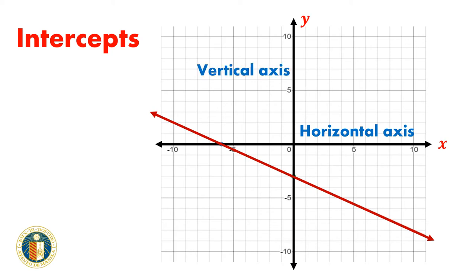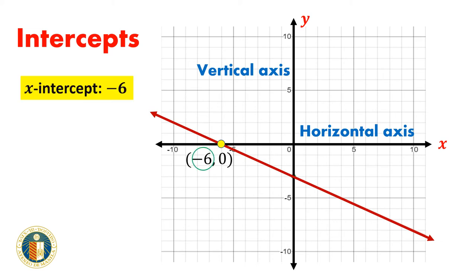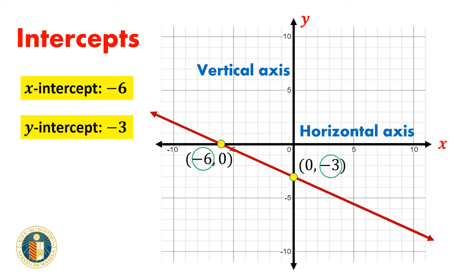So, we can see the line crosses the x-axis at point negative 6, 0. So, the x-intercept is negative 6. And we can also see that the line crosses the y-axis at point 0, negative 3. So, the y-intercept is equal to negative 3.